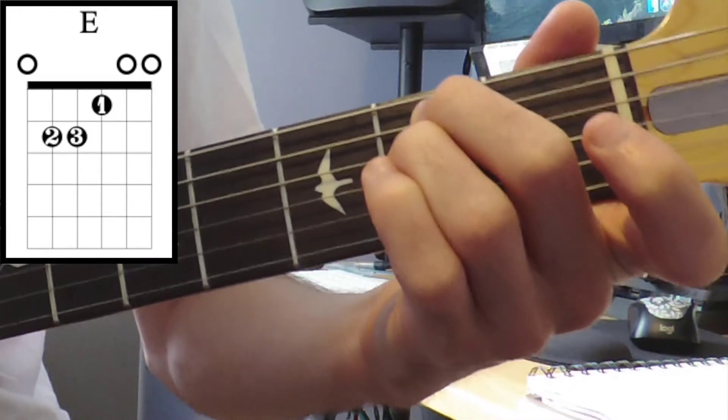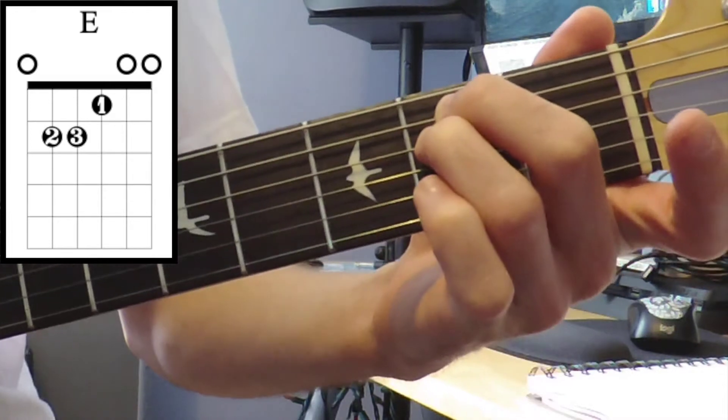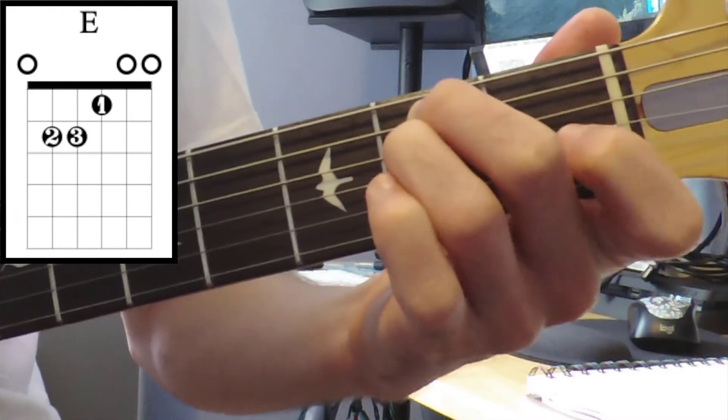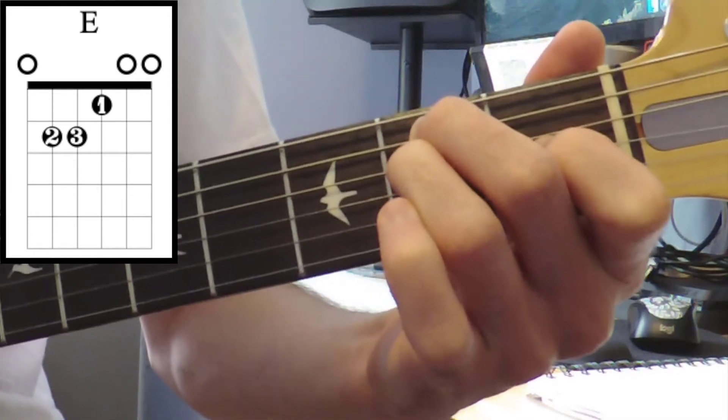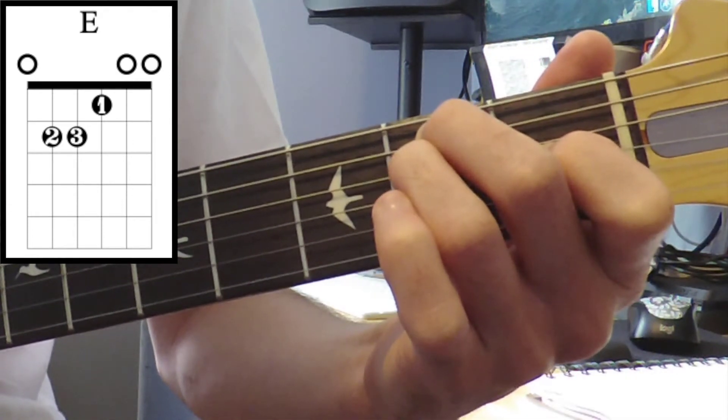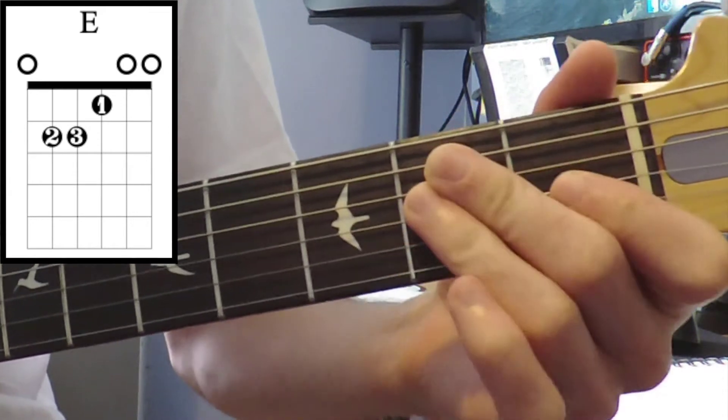underneath that, second fret on the D, first fret on the G, open B, and open E. So again we'll